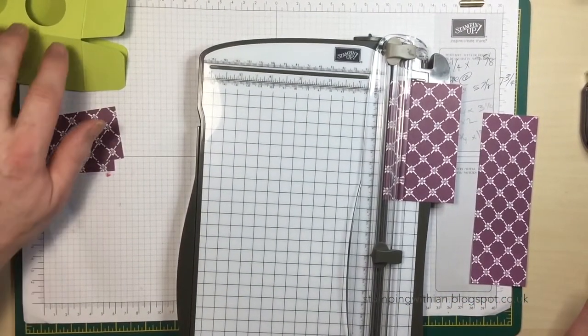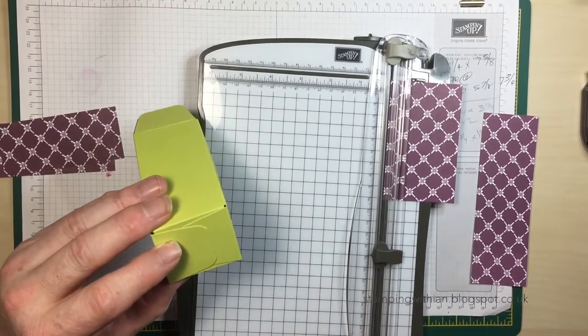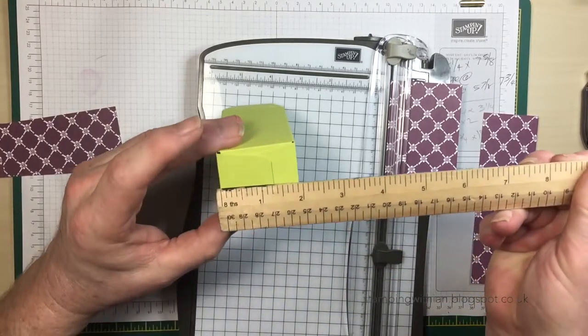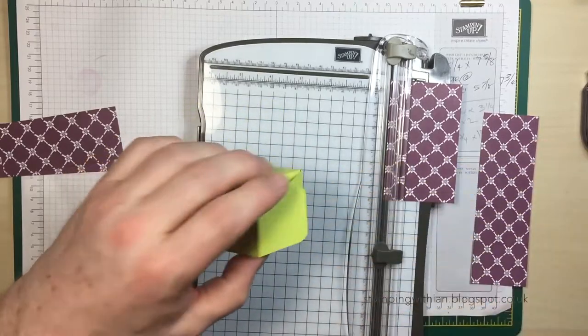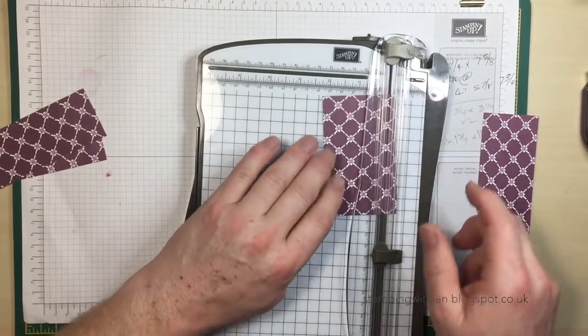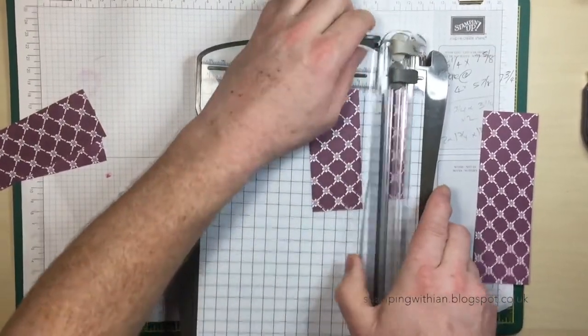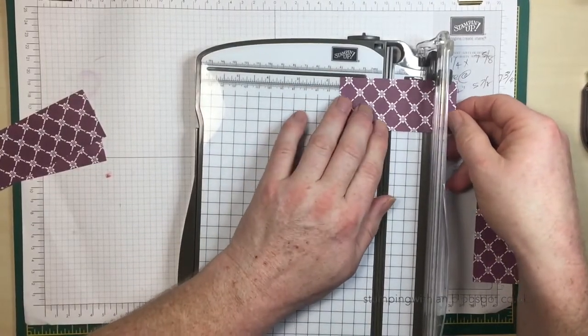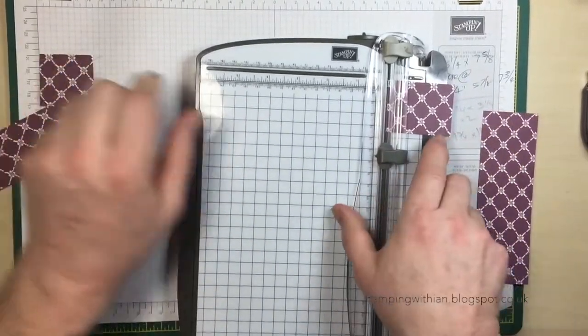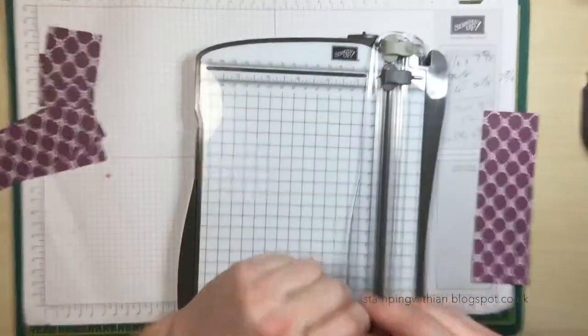I'm going to need something for the ends as well. So that's going to be a square there. So if I do 1 by 1 and 3/4 square - well that will do that. So 1 and 3/4 here, and then 1 and 3/4 here, and then 1 and 3/4 here. All right, that's all my DSP bits.